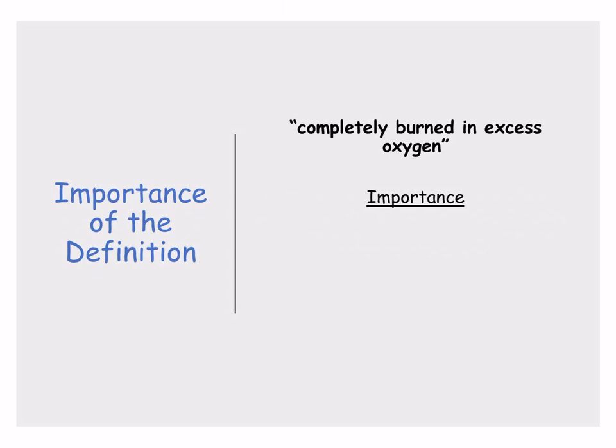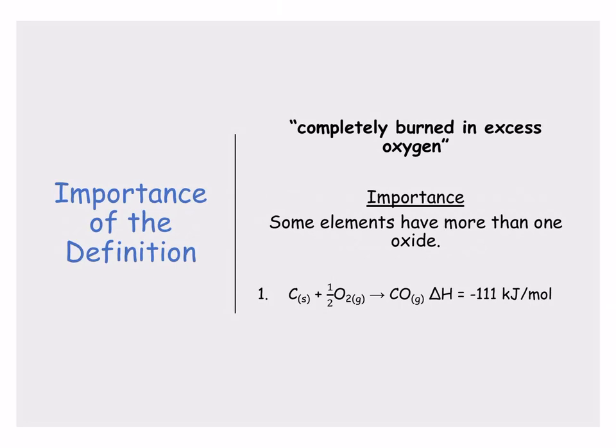Completely burned in excess oxygen — why is that important? In some elements, they have more than one oxide. For example, there could be carbon dioxide or carbon monoxide — two forms of carbon oxides. If we look at equation one, we are forming carbon monoxide, and the delta H is negative 111 kilojoules per mole — a negative delta H means an exothermic reaction, so heat is given out. Equation two is the formation of carbon dioxide, with delta H of negative 394. It's also exothermic, but there is so much more energy released in the formation of carbon dioxide than carbon monoxide.